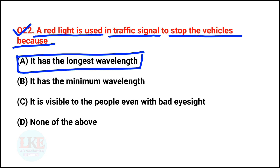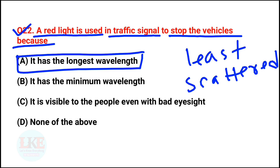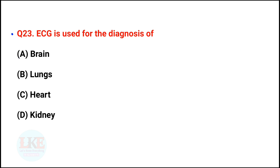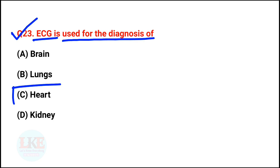Among the 7 colours of white light, red colour has the longest wavelength. Because of that, red colour is least scattered by atmospheric dust and other particles. Therefore, red colour is used to indicate any danger sign. Question number 23: ECG is used for the diagnosis of the heart. ECG stands for electrocardiography or electrocardiogram.